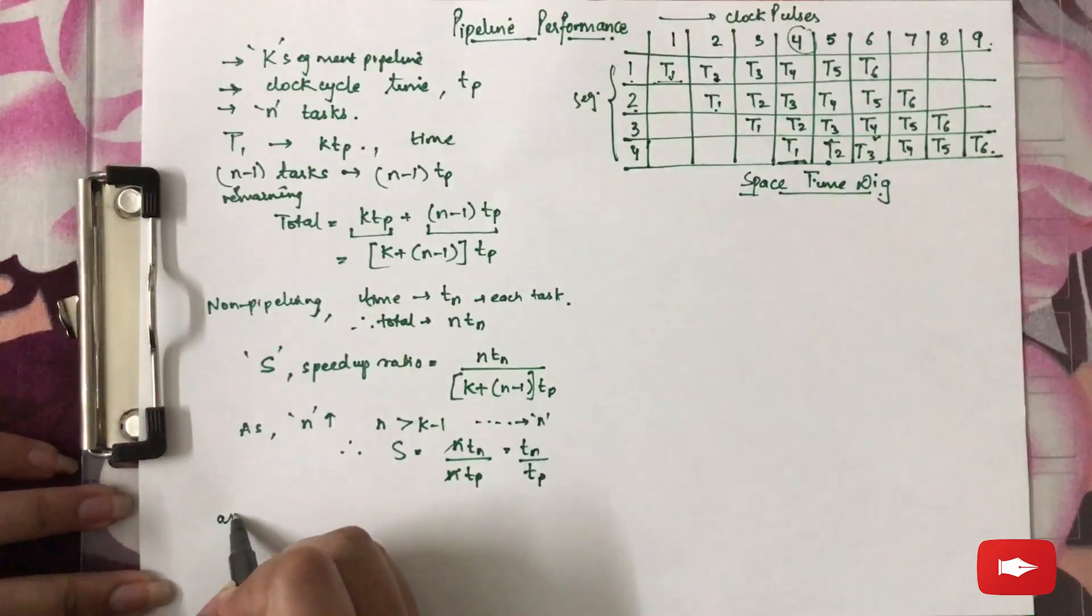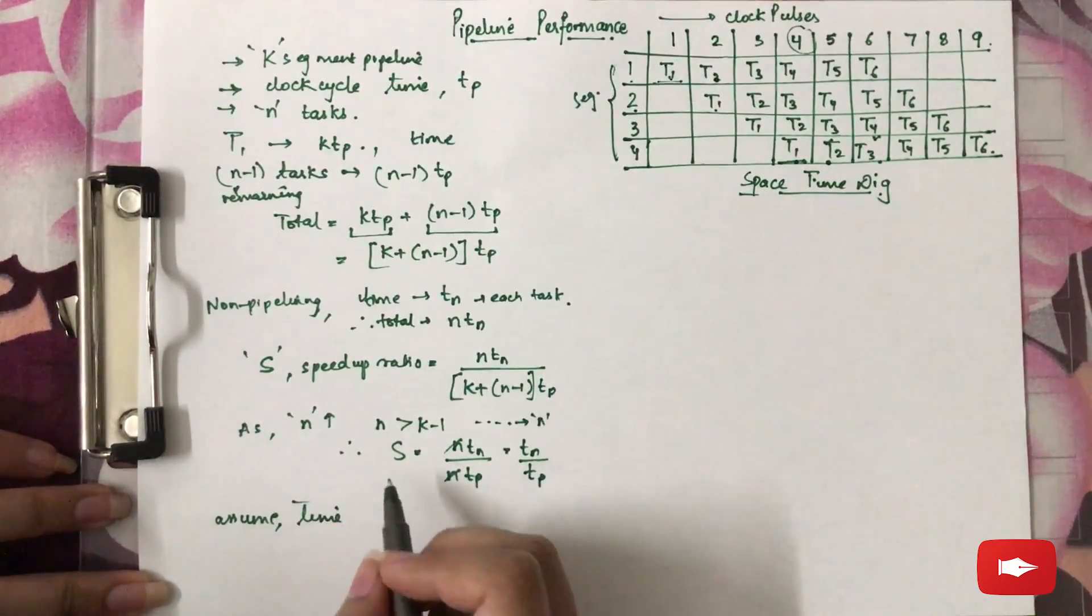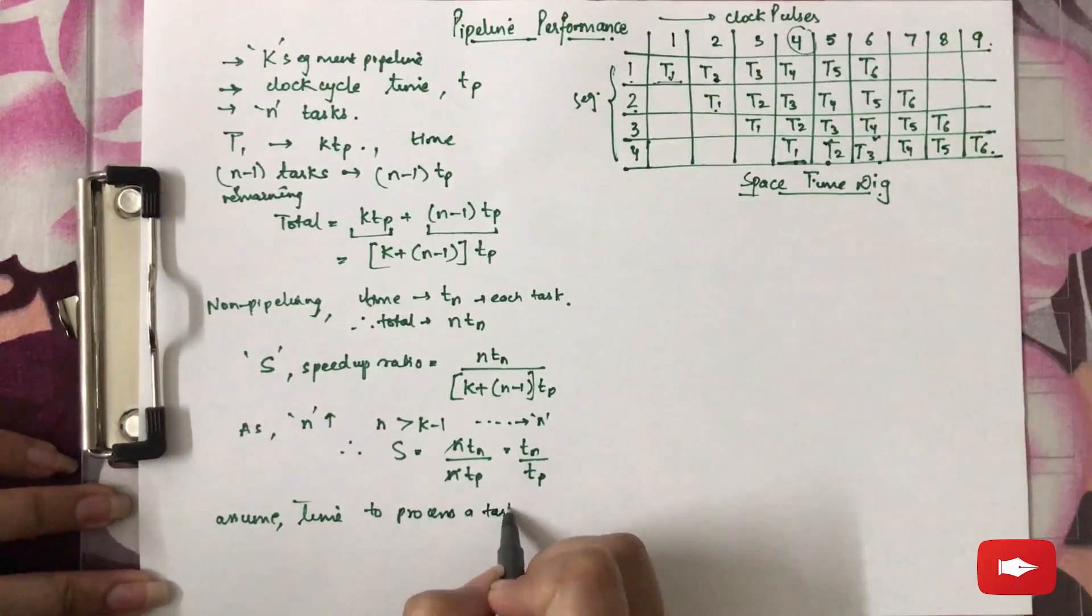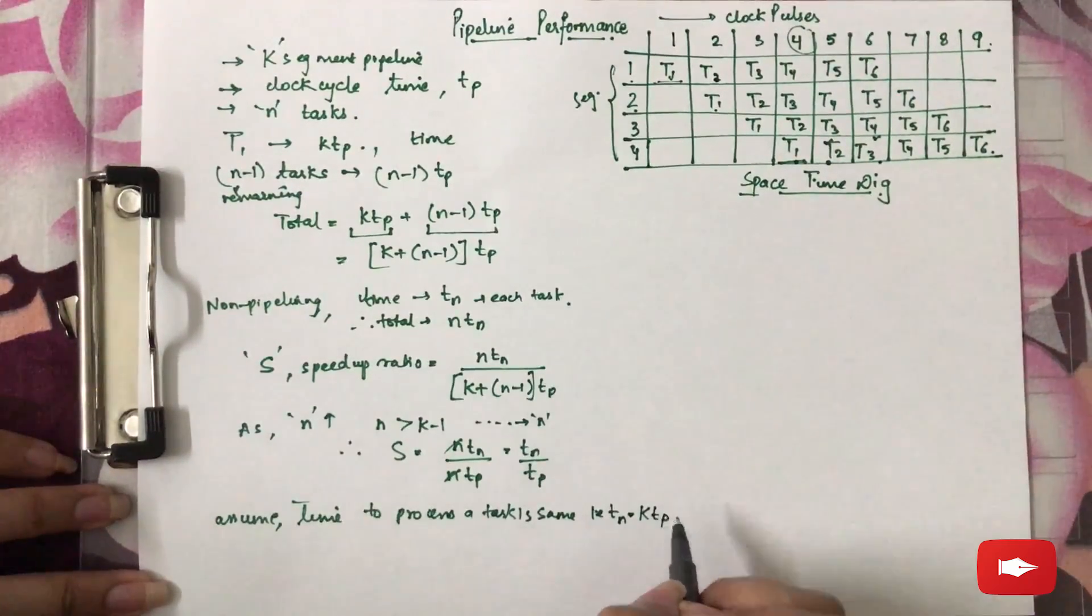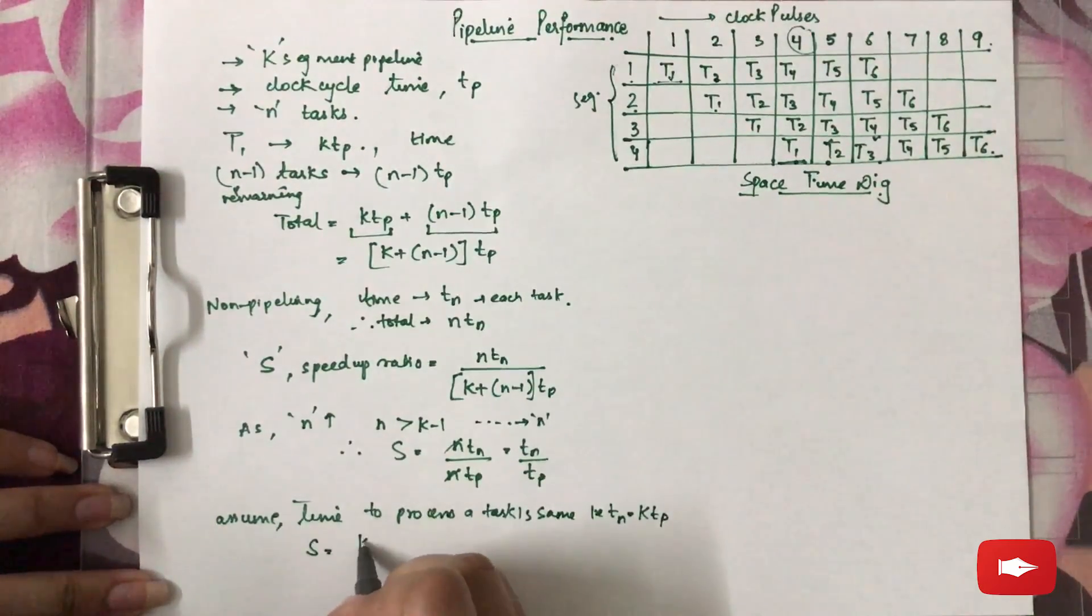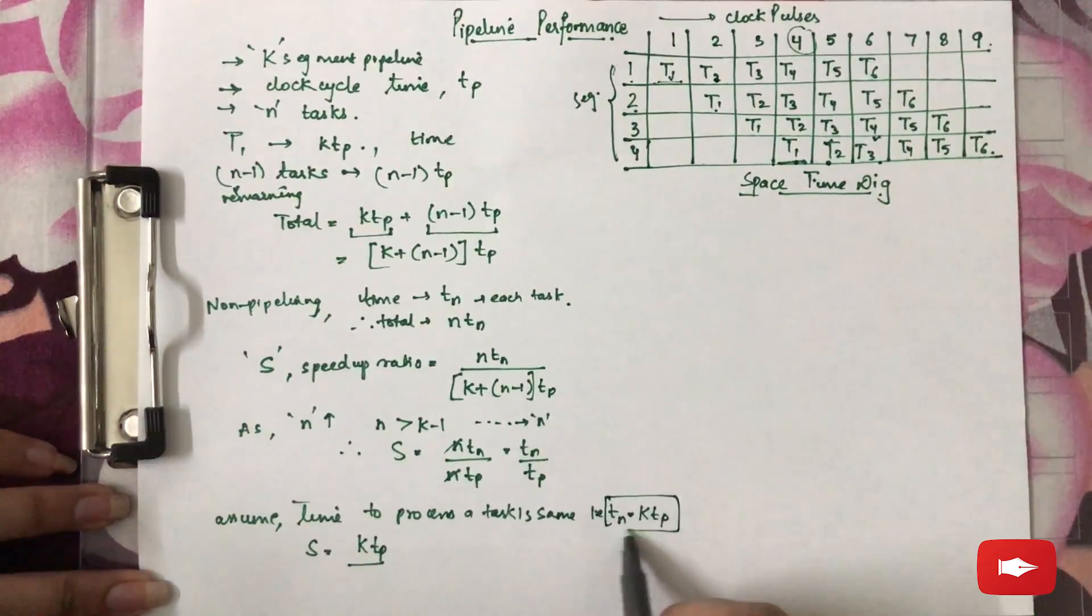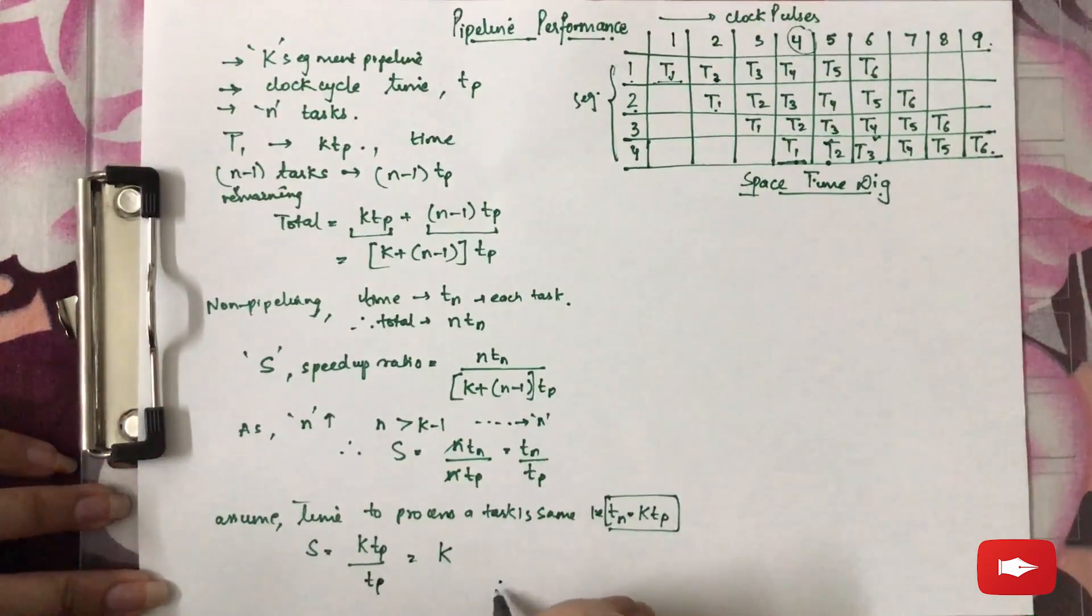Now if we assume the time to process a task is the same, that is TN equals KTP, replacing TN by KTP from this assumption, it will give S equals KTP upon TP, which will be K. Therefore, S equals K.